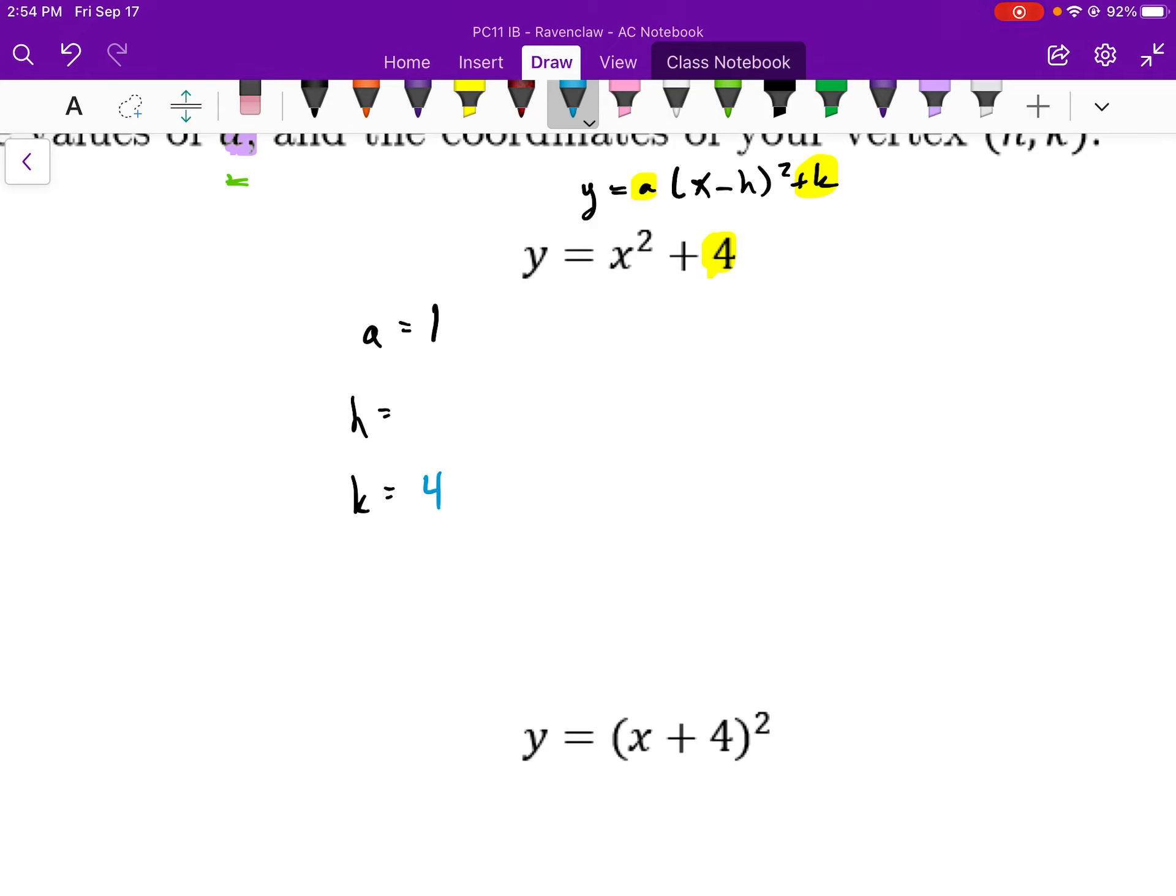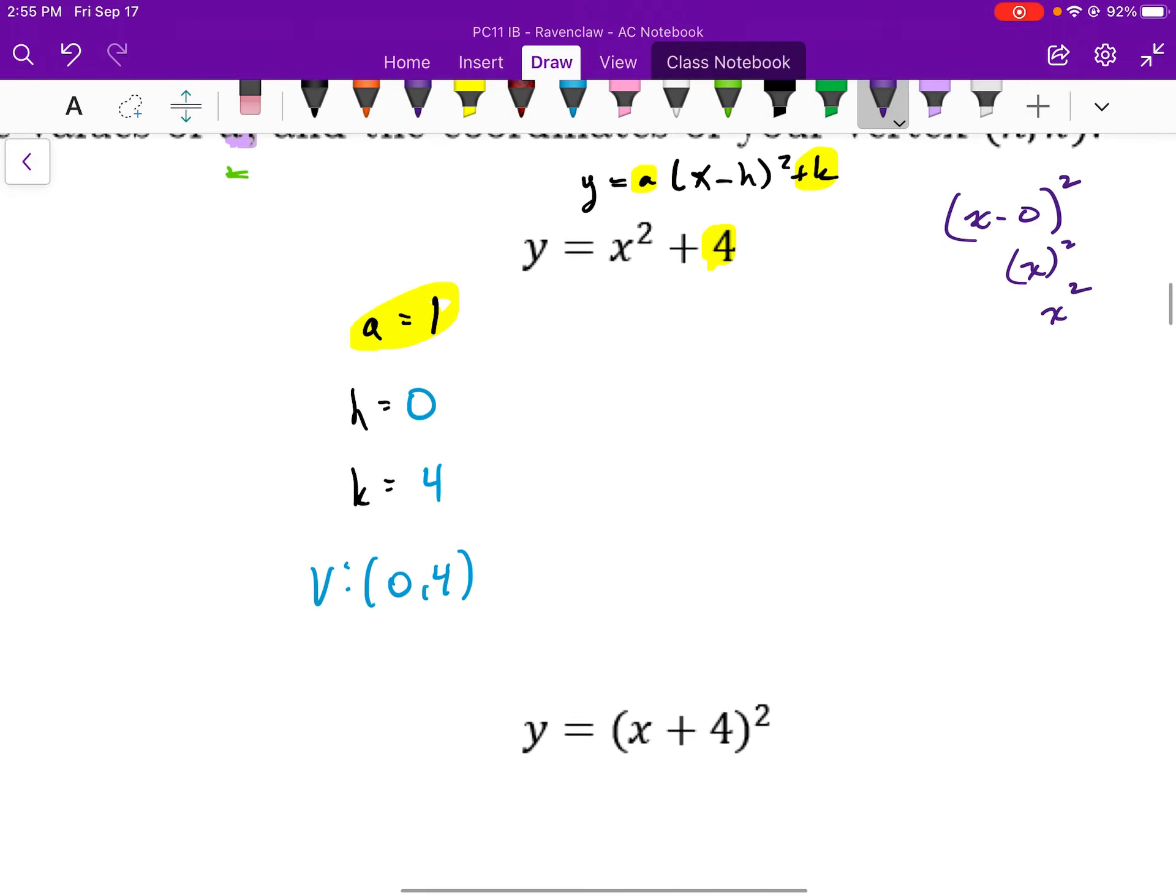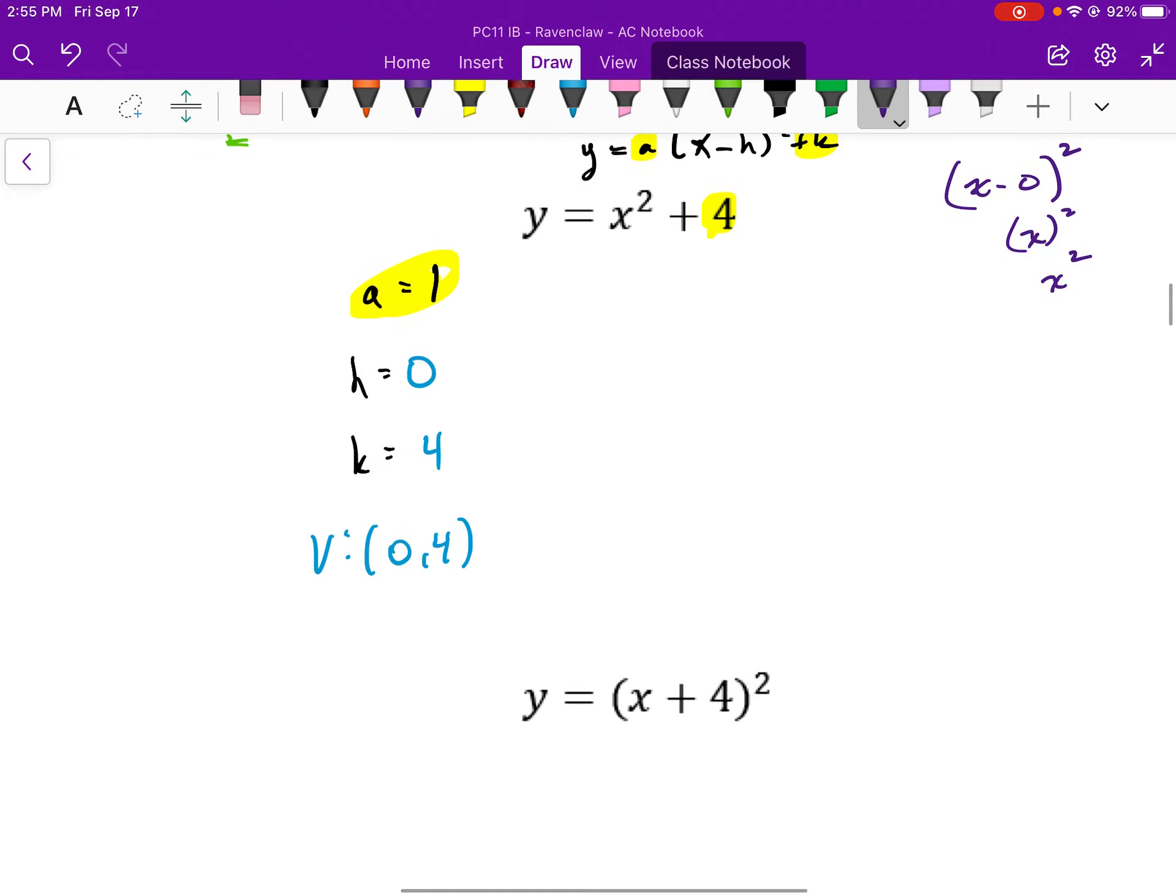h is going to be 0. So I get my vertex to be 0, 4. a is 1. It's upward opening. If you don't believe me that h is equal to 0, let's consider, let's just plug this in. If I have a factor that is x minus 0 squared, x minus 0 is just x. And if I square that term, x squared is x squared. You may want to make note of this, so you don't make this mistake, or commit this oversight, really.